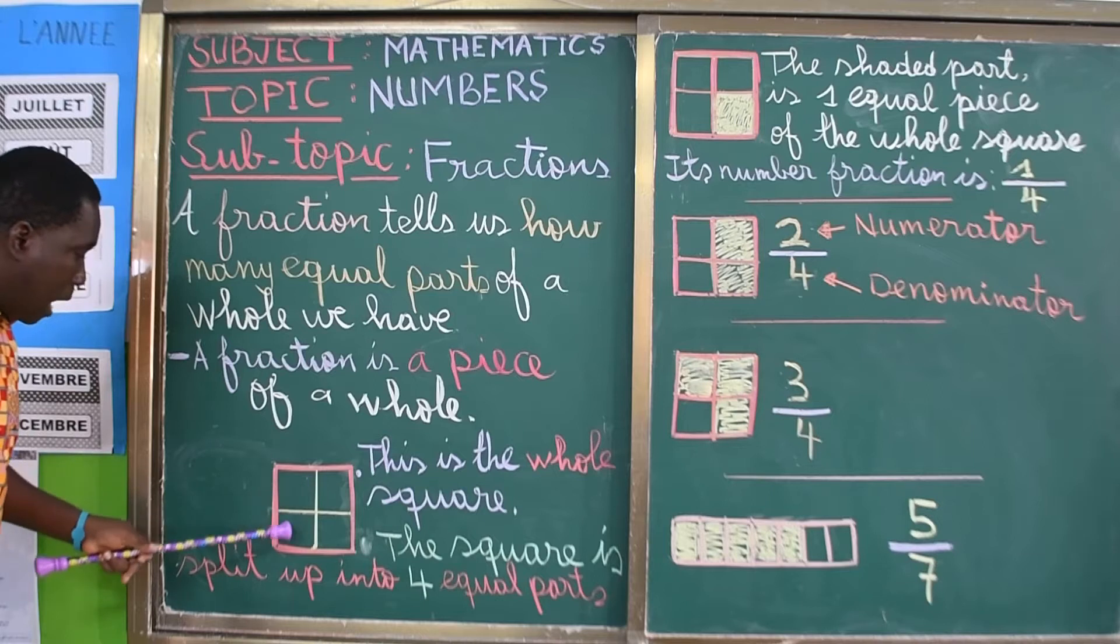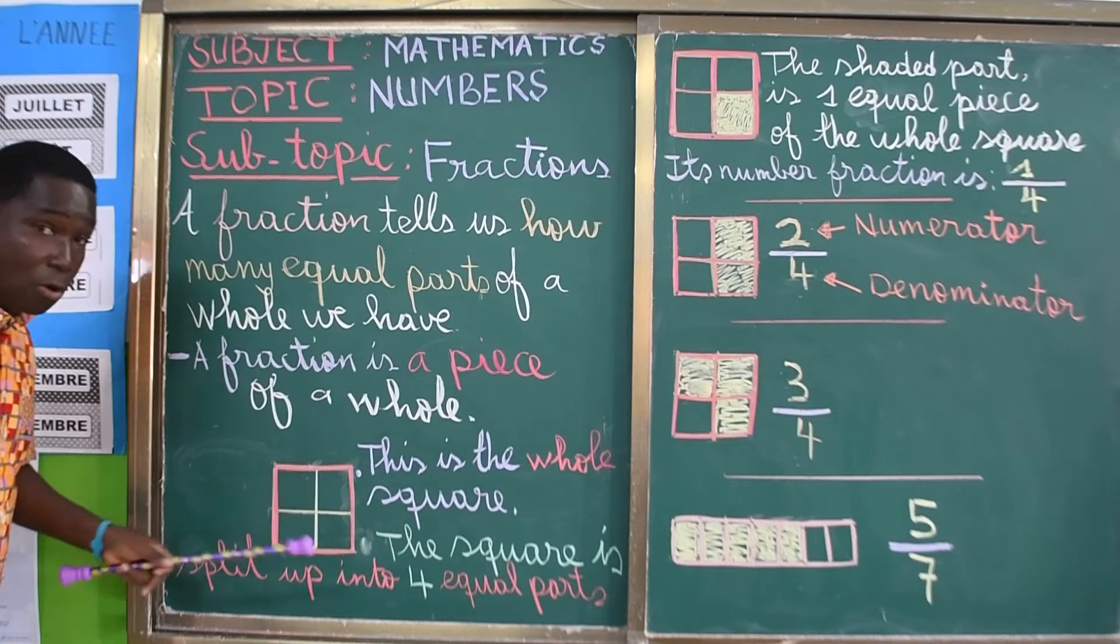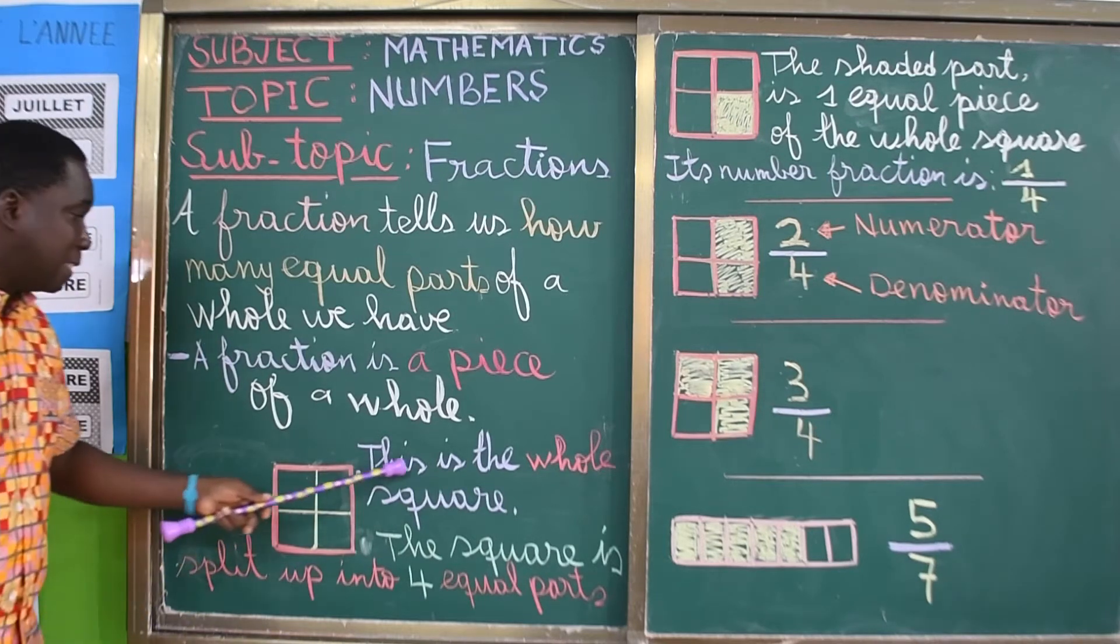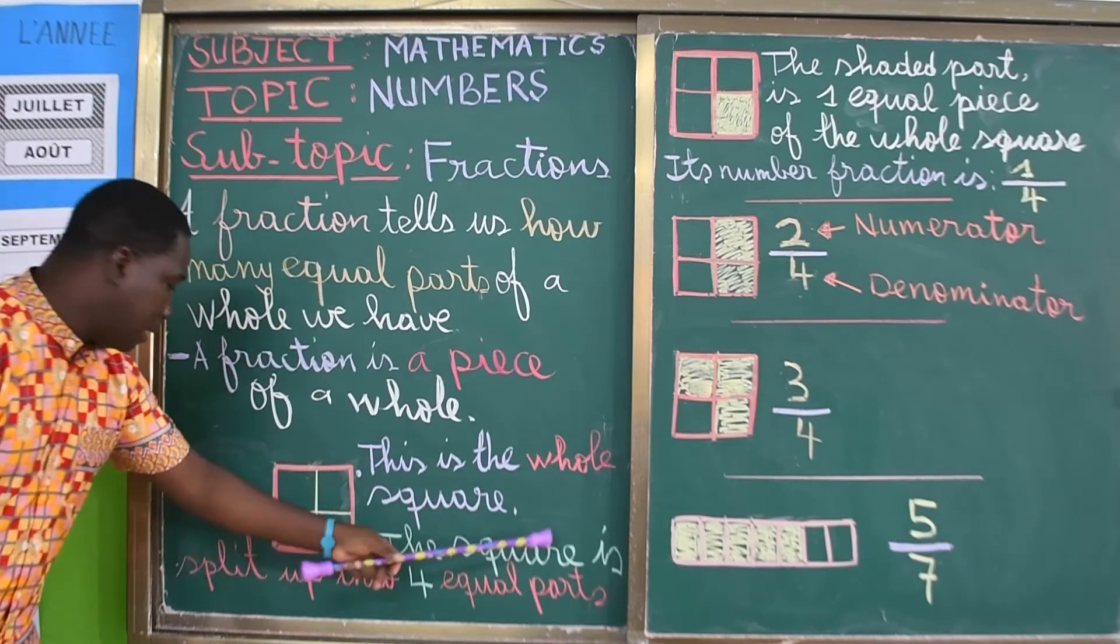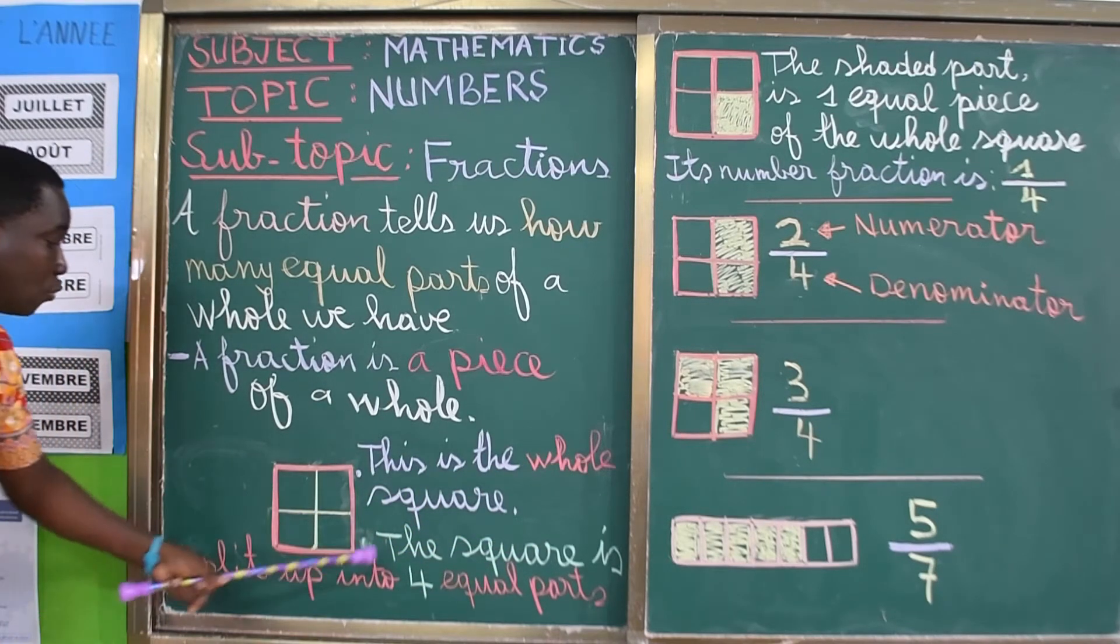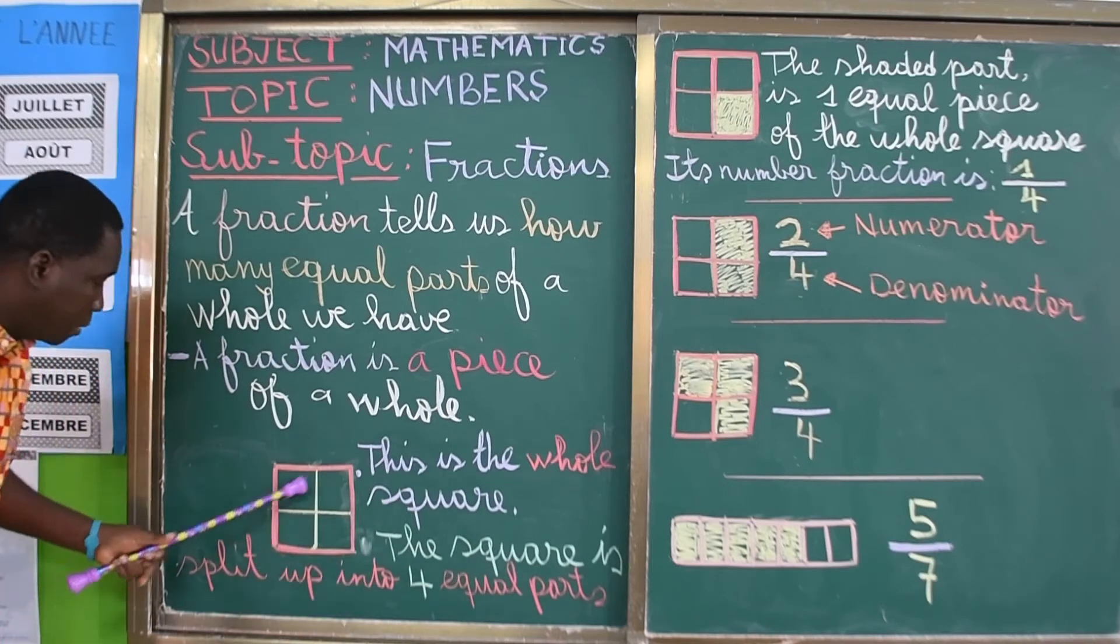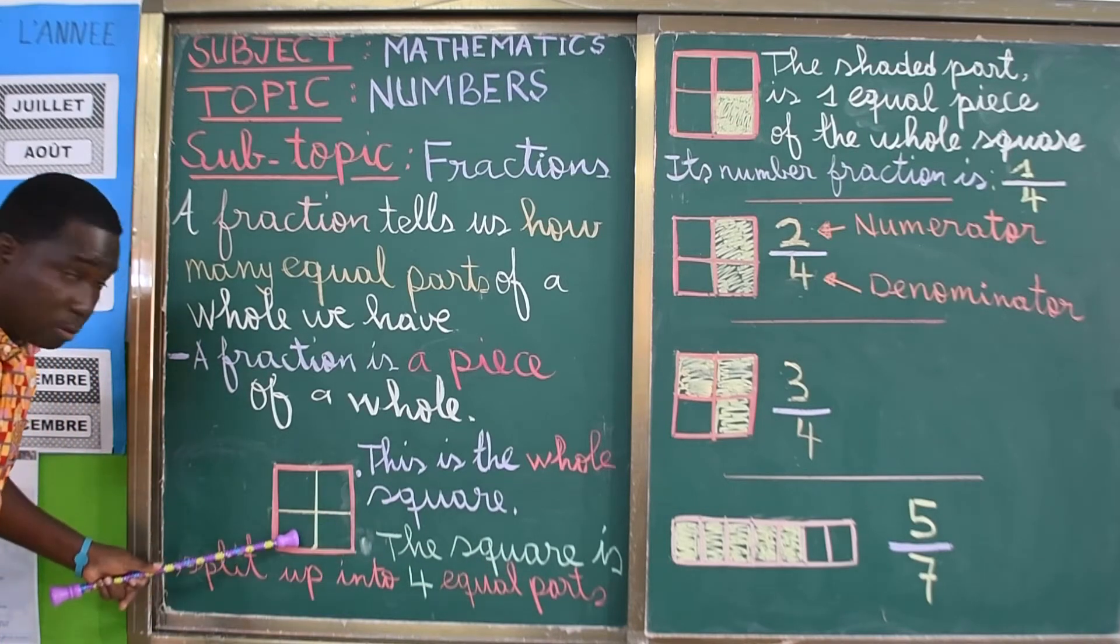The squares have been divided into four parts. So this is the whole square here. But the square is split up into four equal parts. One, two, three, four.